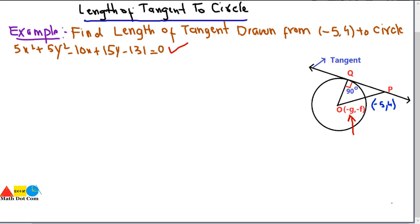After drawing this diagram, we have to find the length of the tangent. From this diagram, we check what is known and what is unknown. We have to find the length of the tangent, which is QP — the length of the tangent from point P to the circle. We will use the Pythagoras theorem, which is basically used for a right angle triangle.